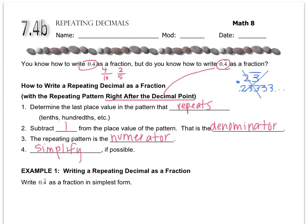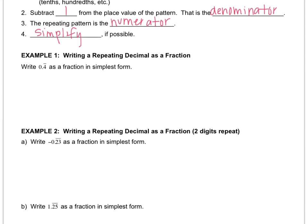So let's check out that 0.4 repeating example. This repeats in the tenths place because there's only one decimal place that's repeating. So 10 minus 1 gives me 9. So 9 is going to be the denominator. The value that's repeating, 4, is going to be the numerator, 4 over 9. And since it doesn't reduce, that's my answer. Boom, done. Next question.